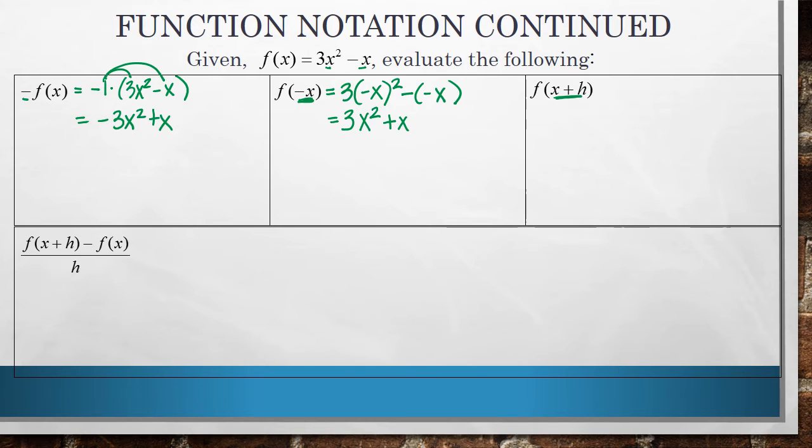f of x plus h. So what this means again is to go to our f of x function and anywhere I see an x, I'm going to replace that x with the quantity x plus h. All right, so here we go. It looks really ugly. Don't stress out. Just go very slowly. So anywhere I see an x, I'm replacing it with x plus h. Okay, I'm going to move my equal sign to right there. So again, as we said in the last slide, x plus h quantity squared means x plus h times x plus h.